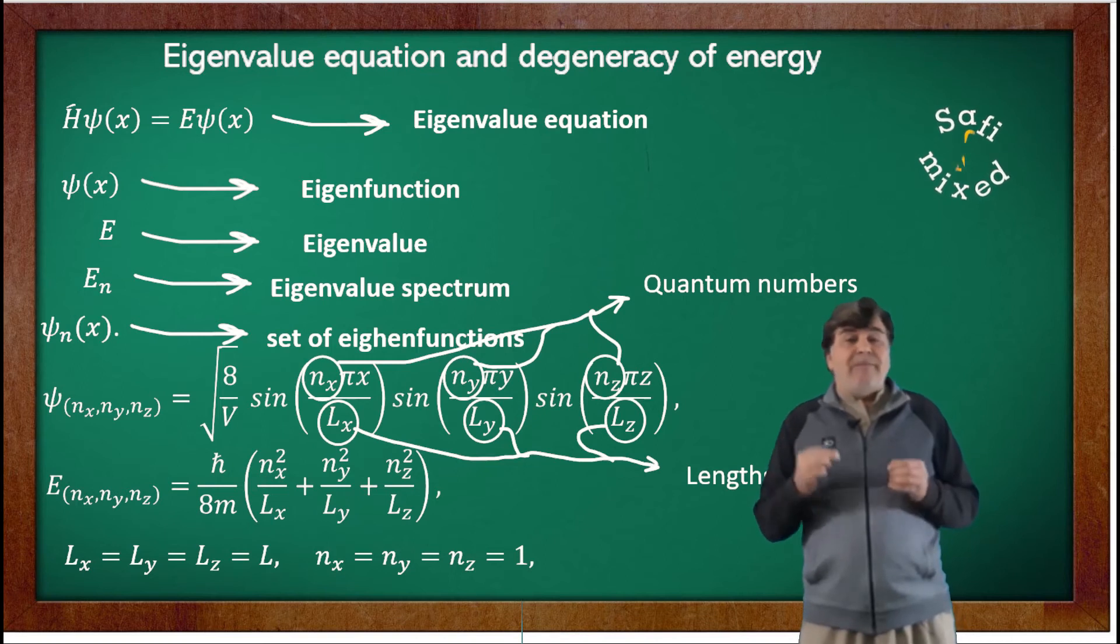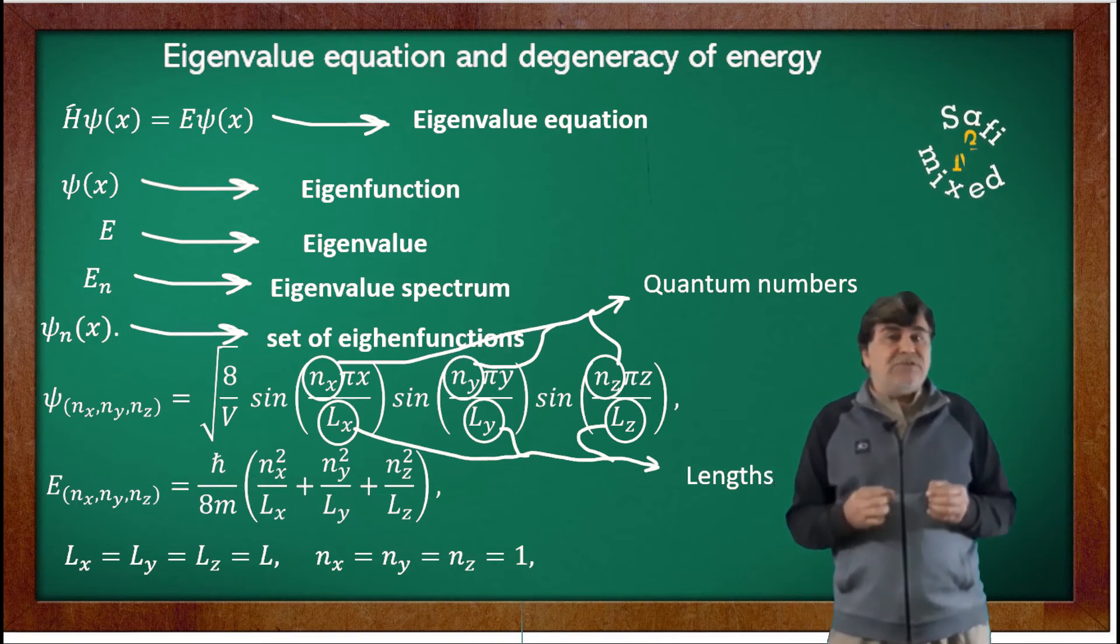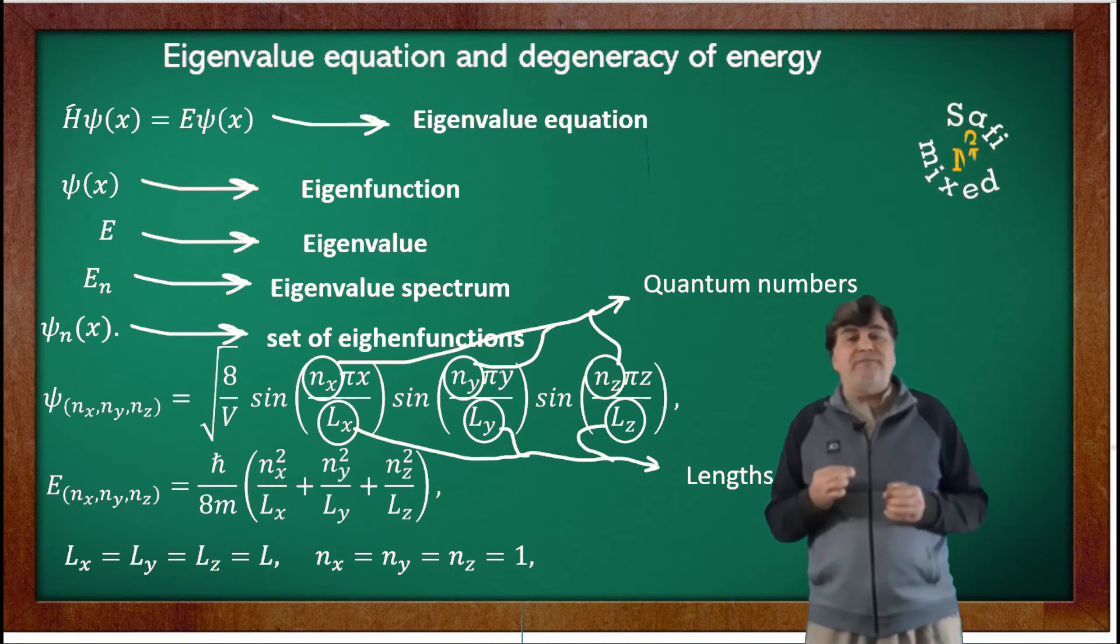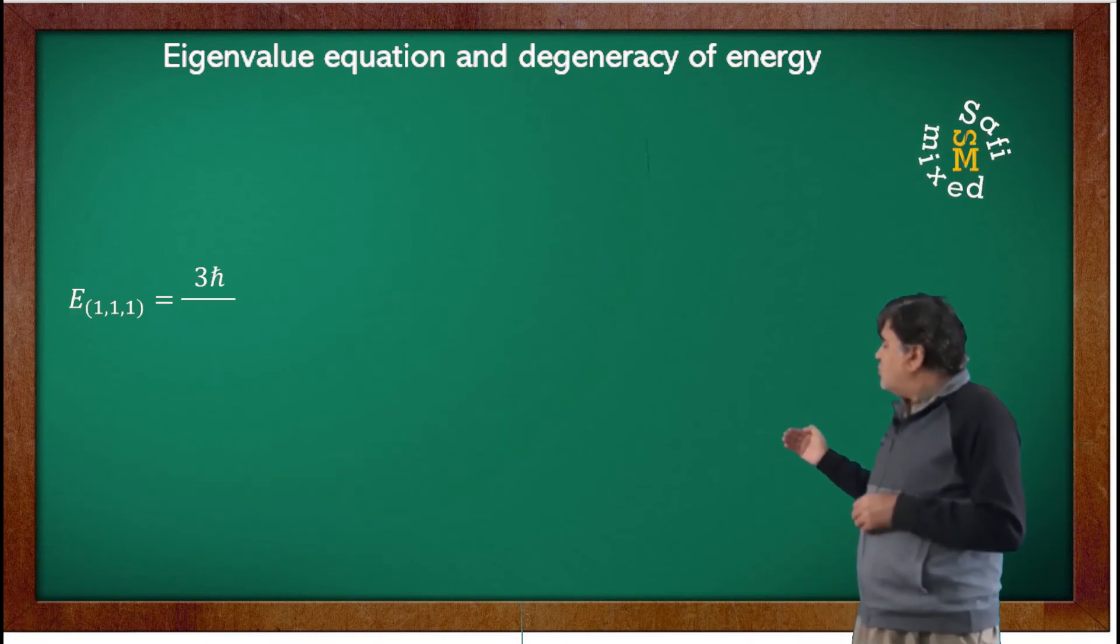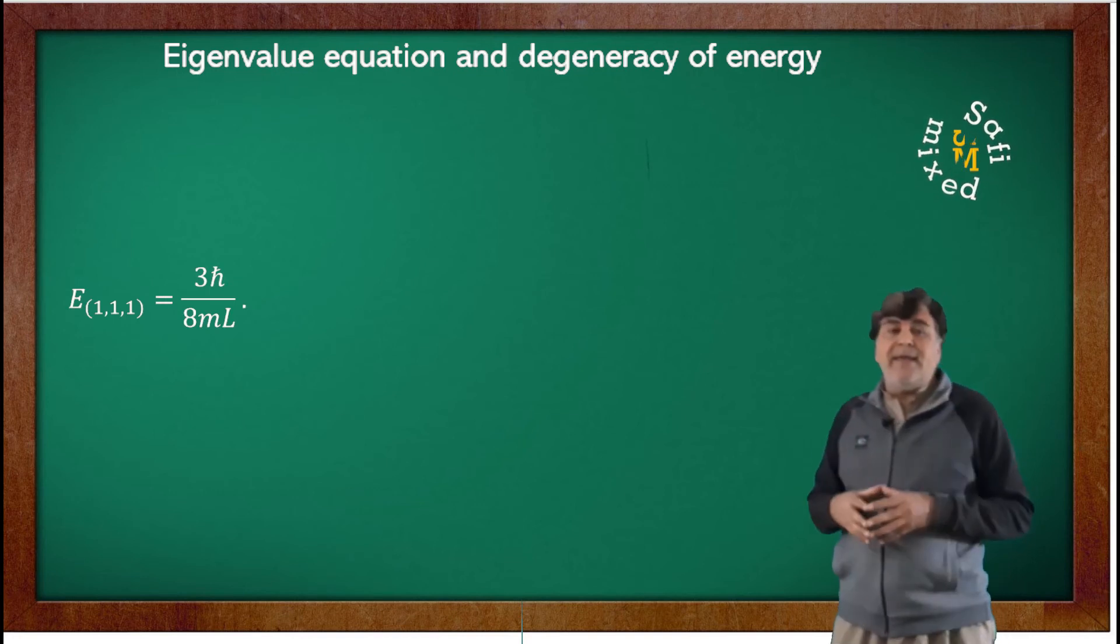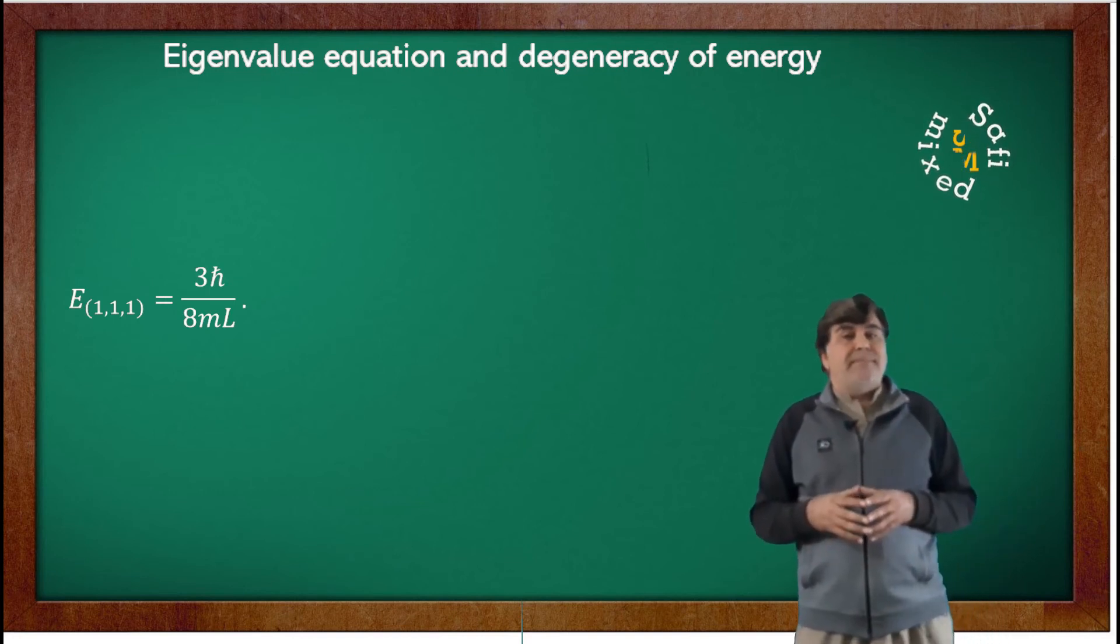Then, substituting these values into the equation for energy, we can write it as E_{1,1,1} = 3ℏ²/(8mL).